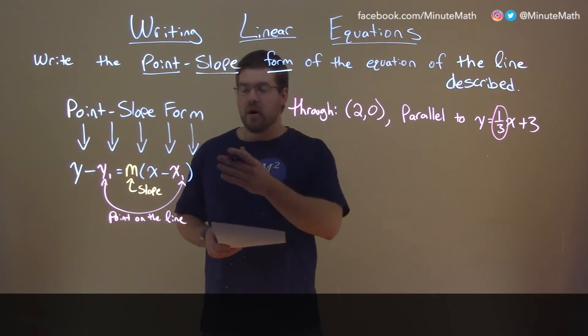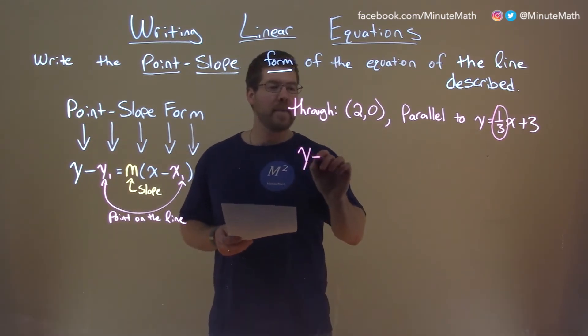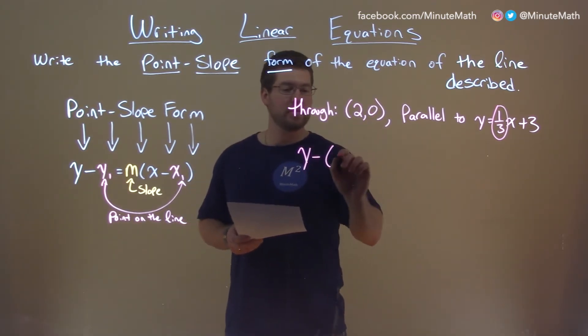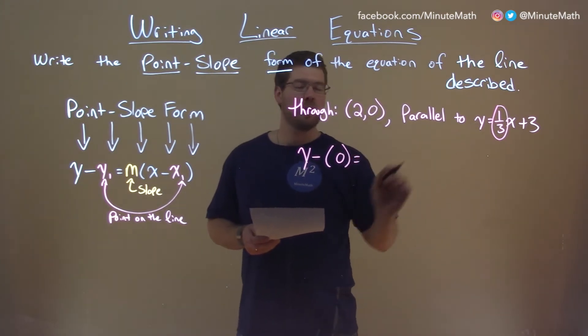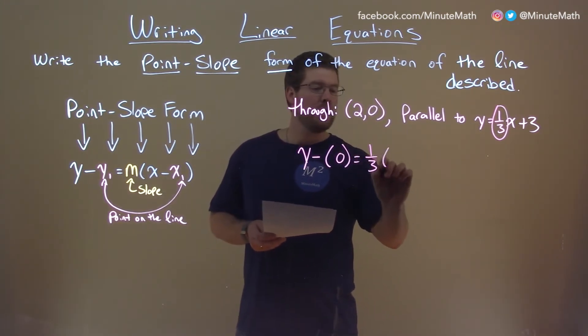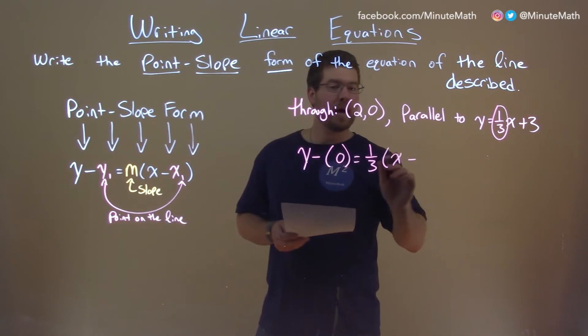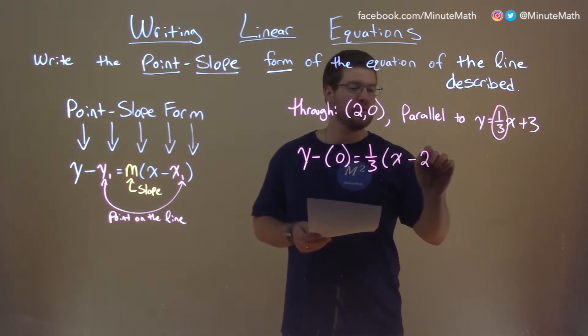So now let's use our equation. y minus y1, which is 0 here, equals our slope here, 1/3, times x minus x1, which is 2.